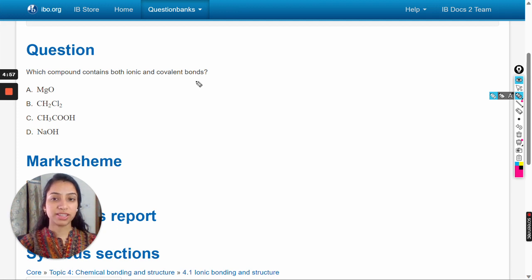Hello dear students, in this video we will solve this question: which compound contains both ionic and covalent bonds? To solve this question, we have to discuss the structure of these compounds. First one is magnesium oxide.